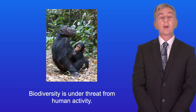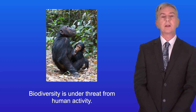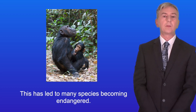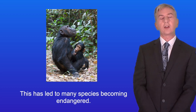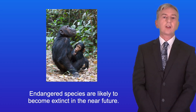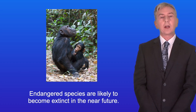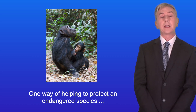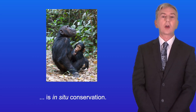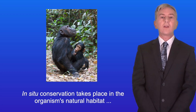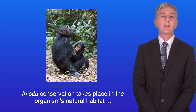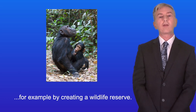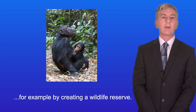Biodiversity is under threat from human activity and this has led to many species becoming endangered. Endangered species are likely to become extinct in the near future. One way of helping to protect an endangered species is in situ conservation. In situ conservation takes place in the organism's natural habitat, for example by creating a wildlife reserve.